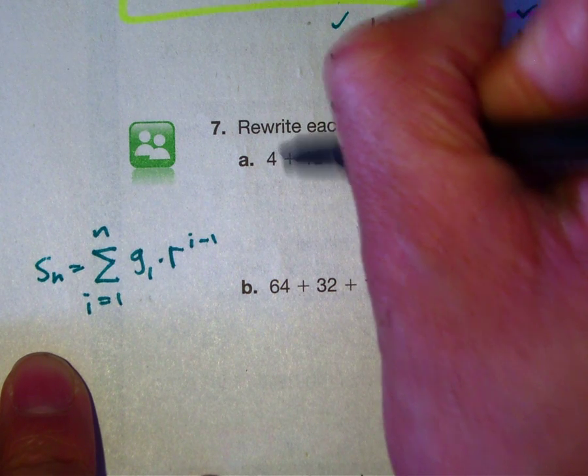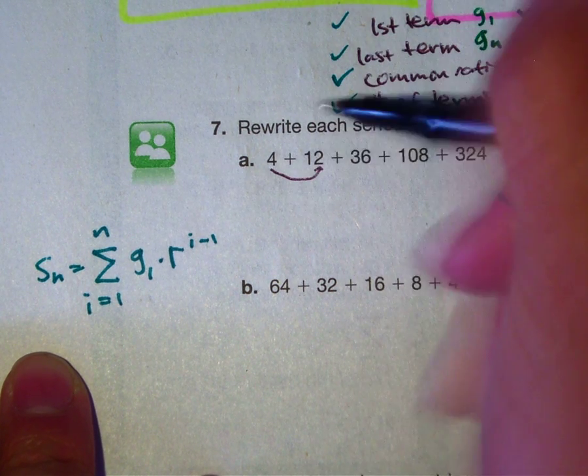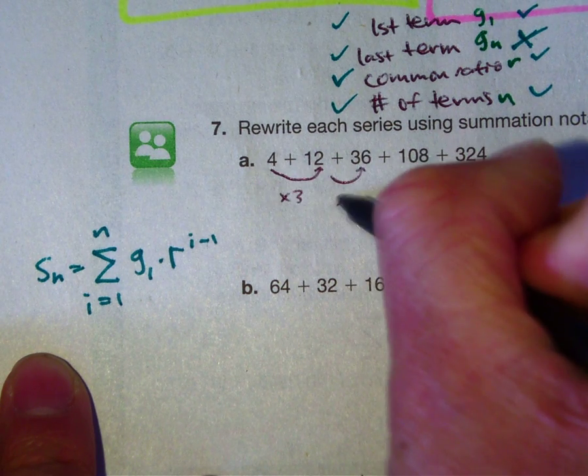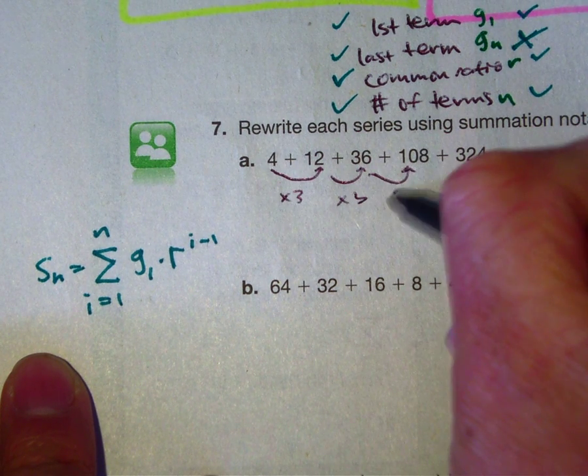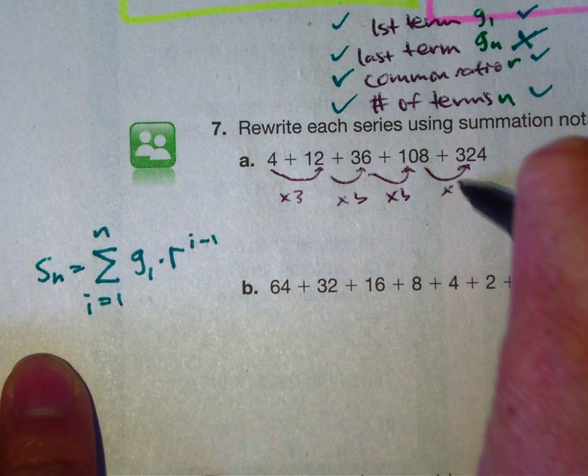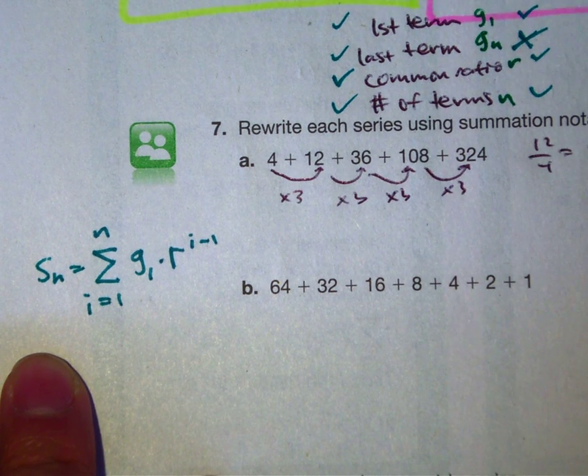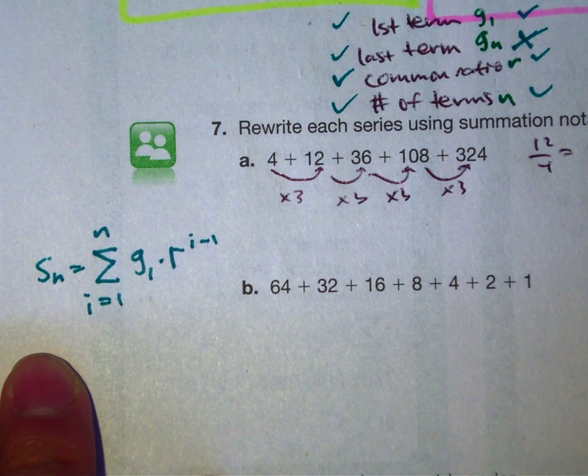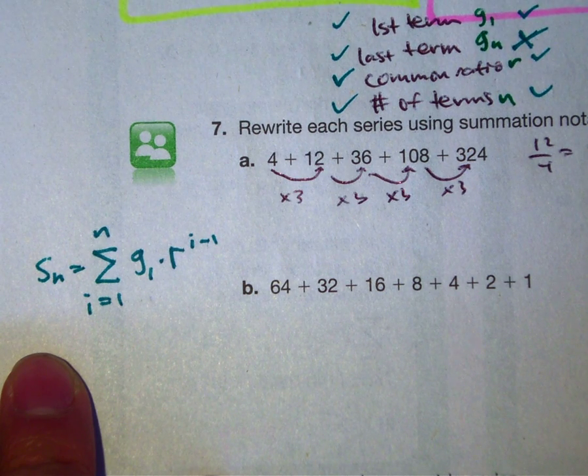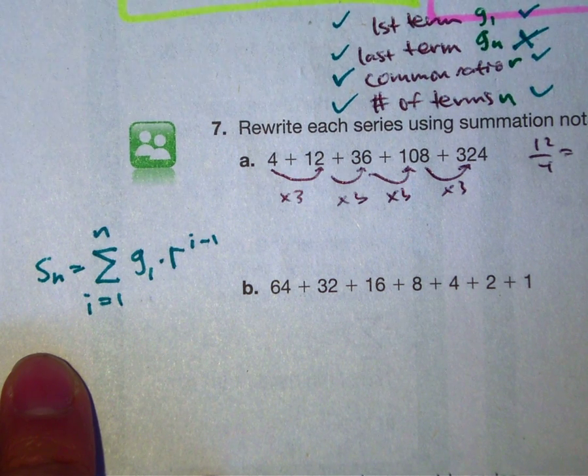I recognize to go from the 4 to the 12 I can just multiply by 3. And then if I don't see it, I can just take the two values and divide: 12 divided by 4 is 3, 36 divided by 12 is 3, and 108 divided by 36 is 3.